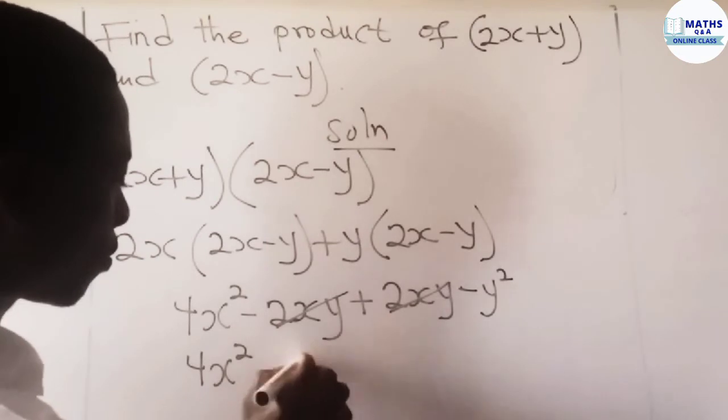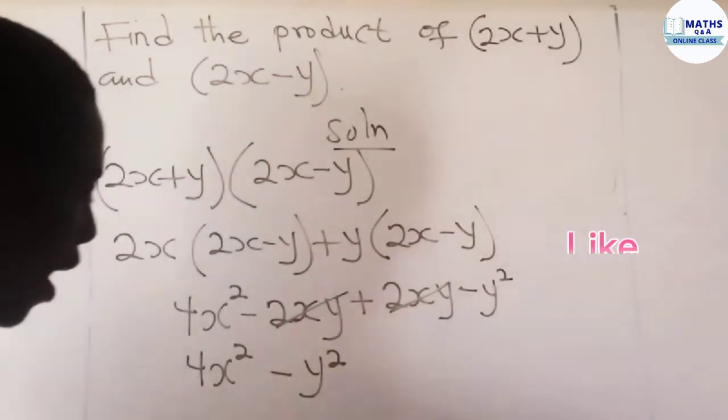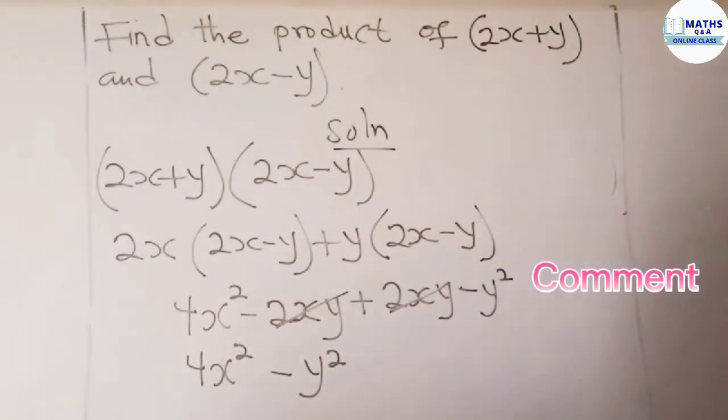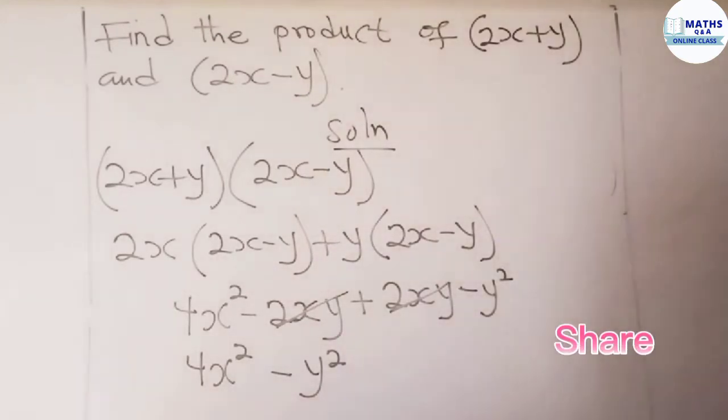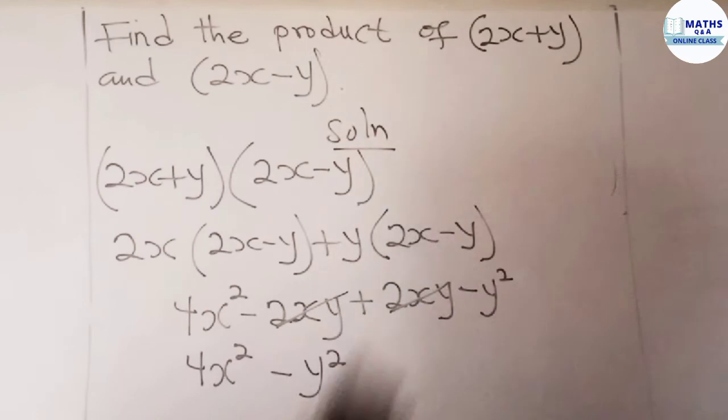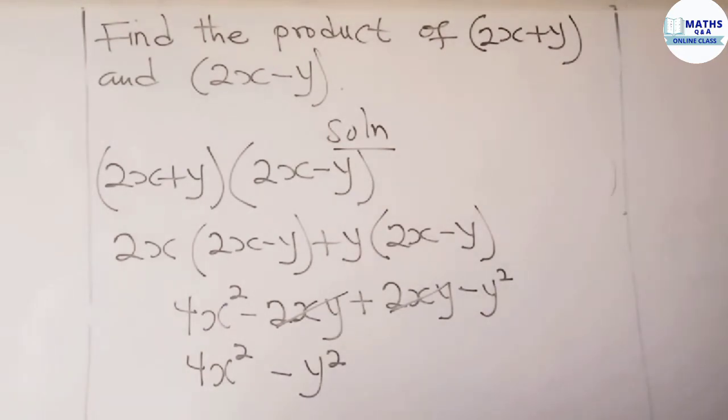So the term left is negative y squared. Our final result becomes 4x squared minus y squared, for the product of 2x plus y and 2x minus y.